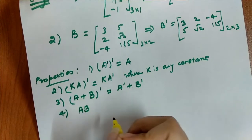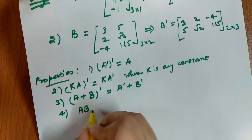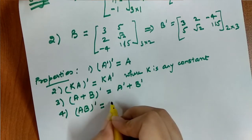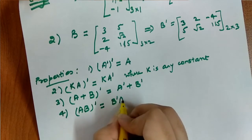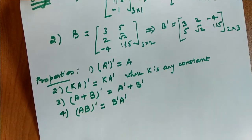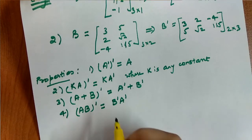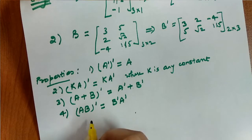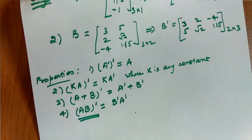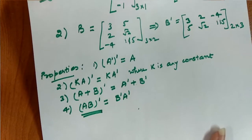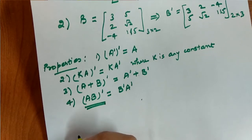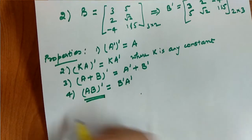The fourth property involves multiplication: if we have two matrices A and B and take their product, the transpose of AB equals B transpose times A transpose. Note the order reversal — we take B transpose and A transpose individually and then multiply them. Let's now take some example questions to verify these properties.